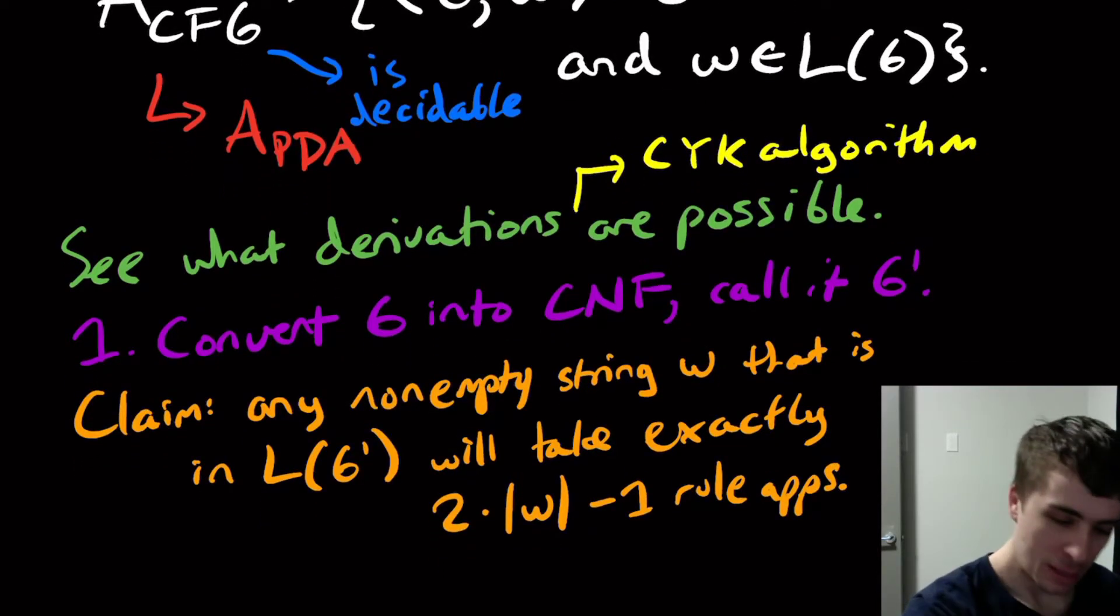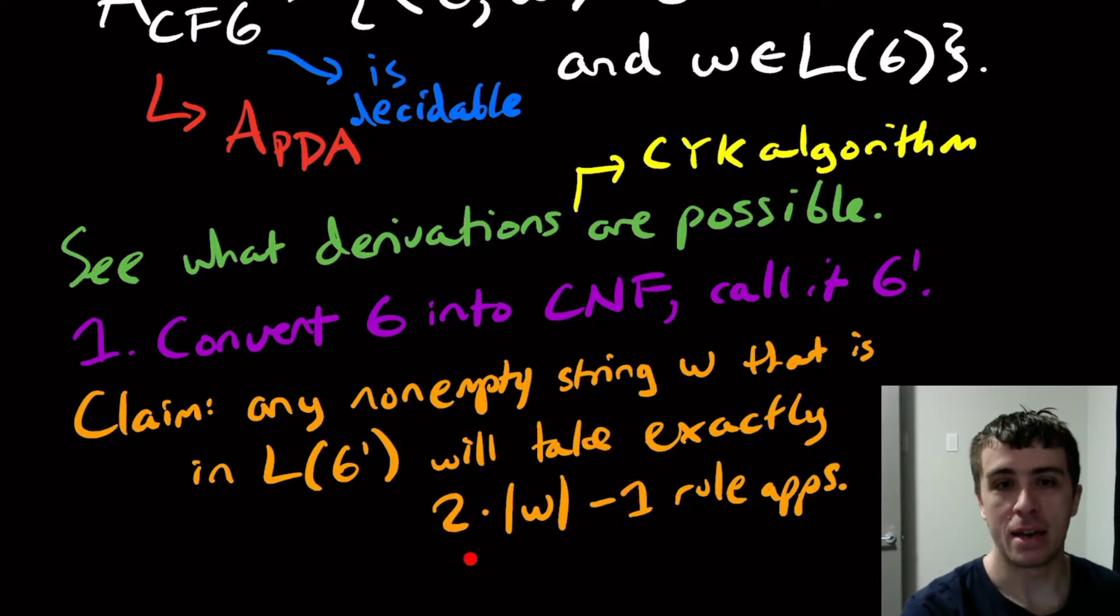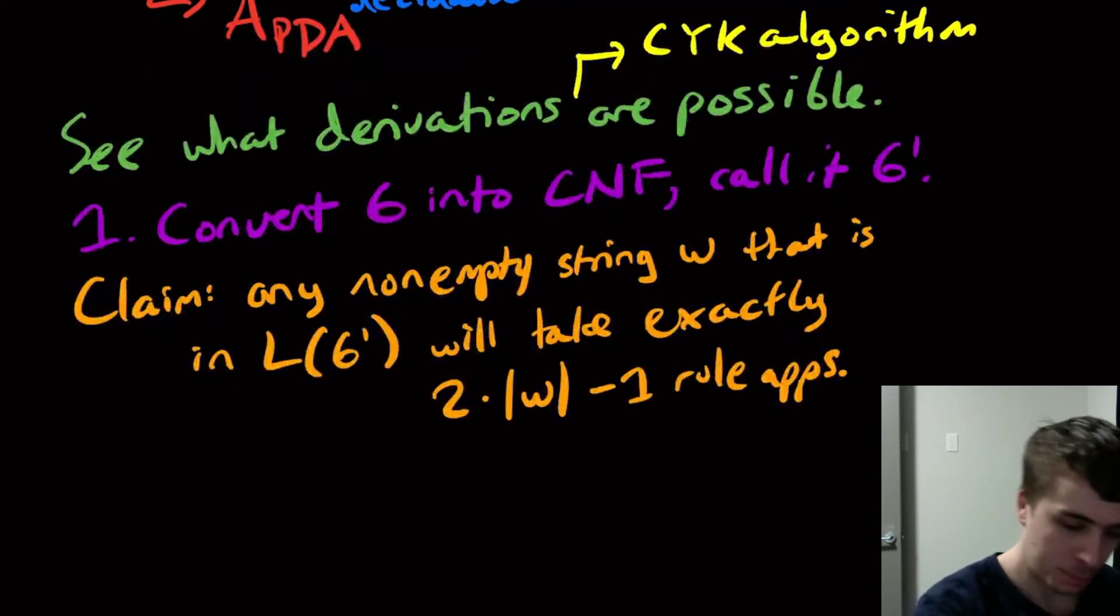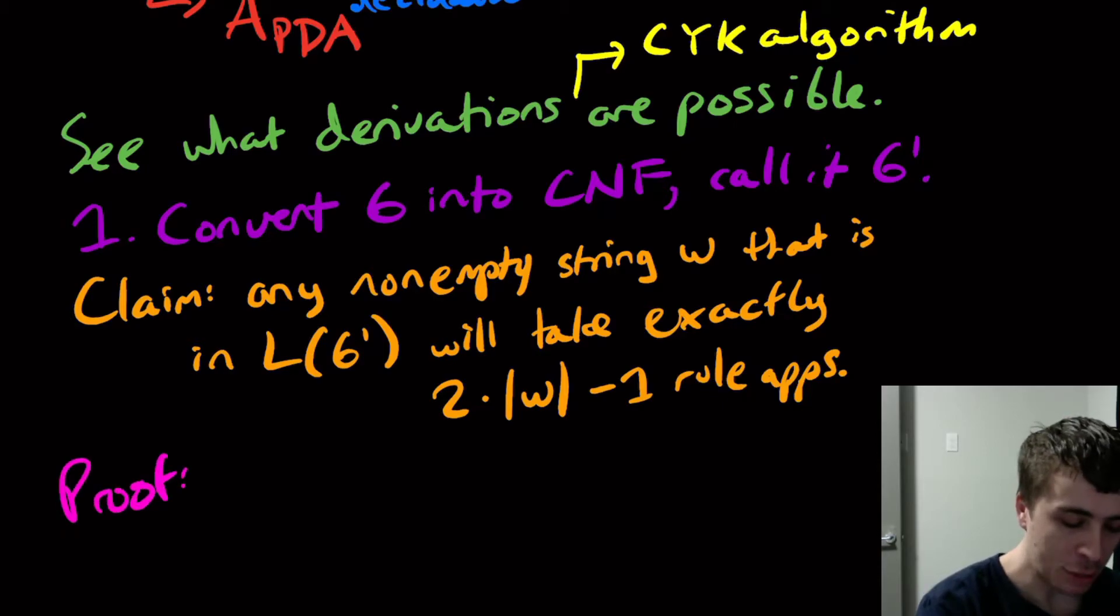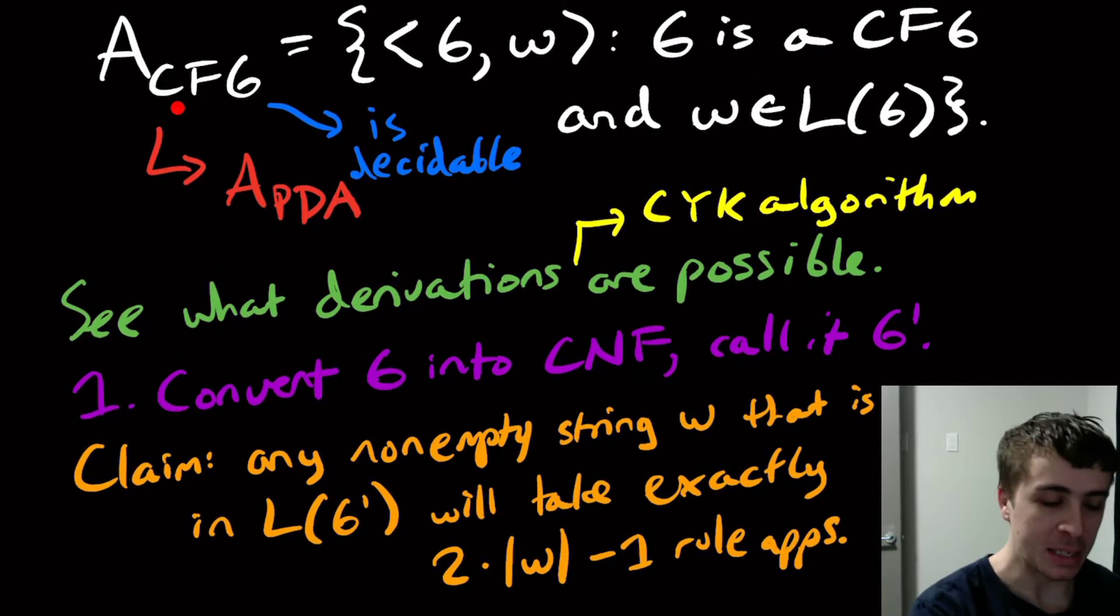So if the length of the string w is 100, then it will take exactly 199 rule applications to generate that string, no matter what it is. So that's one of the awesome things about Chomsky normal form is that you know how many rules it'll take to actually make the string. Whereas if it was an arbitrary grammar, we have absolutely no clue. So how do we actually prove this? Well, actually, once we actually prove this, then figuring out what to do for A_CFG is easy.